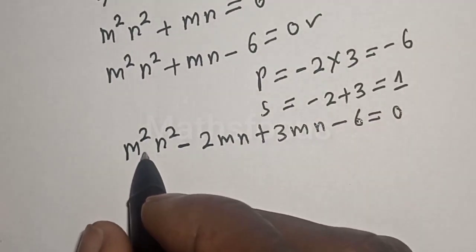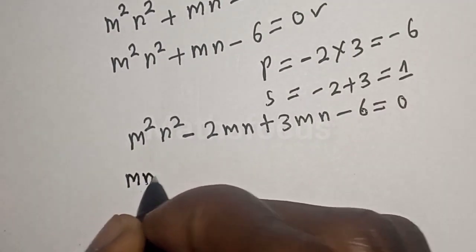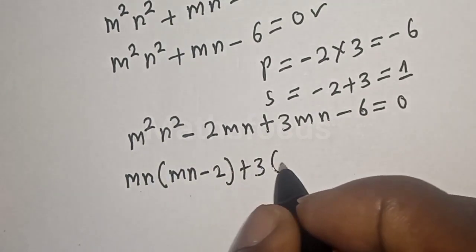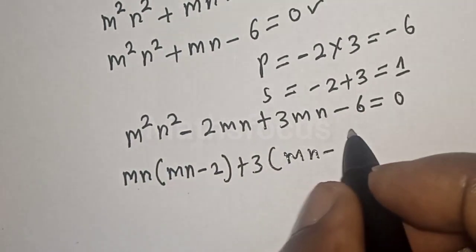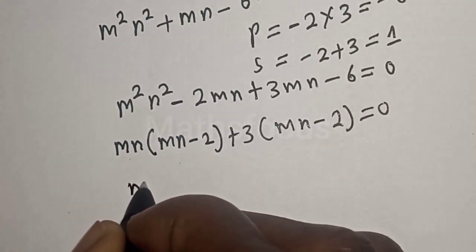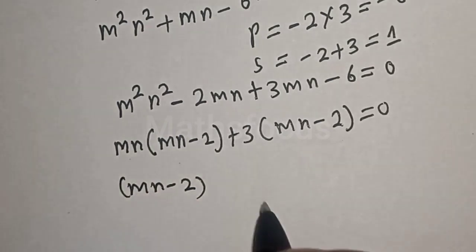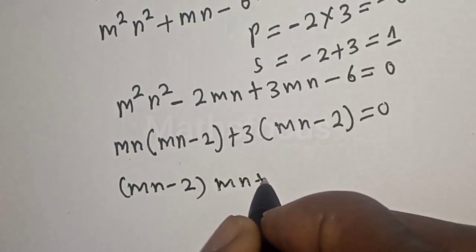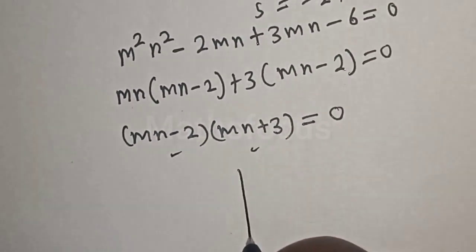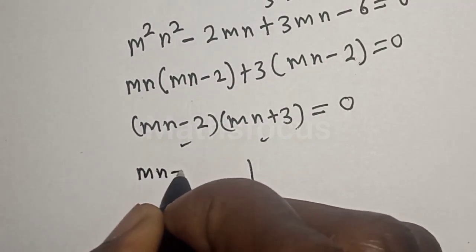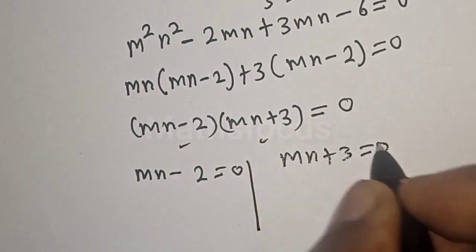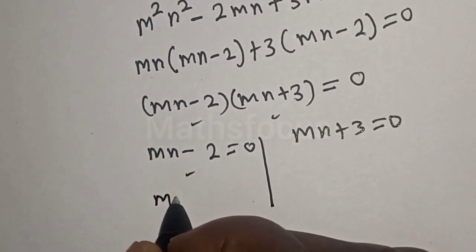Grouping the terms: mn(mn - 2) + 3(mn - 2) = 0. Factoring out the common factor (mn - 2): (mn - 2)(mn + 3) = 0. This gives two cases: Case 1 is mn - 2 = 0, and Case 2 is mn + 3 = 0.